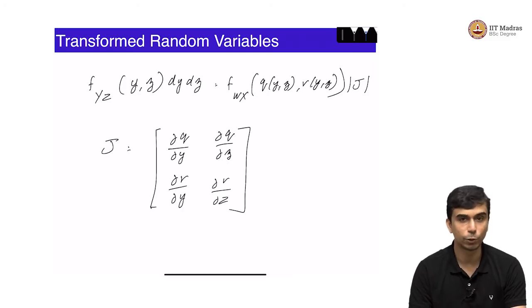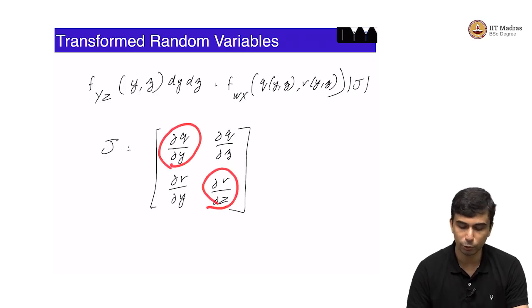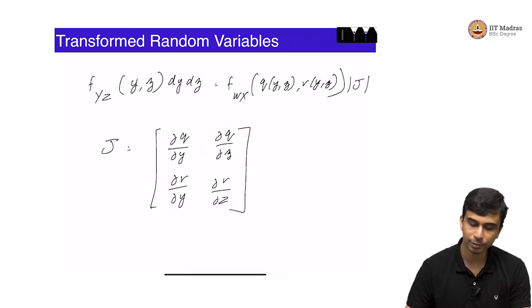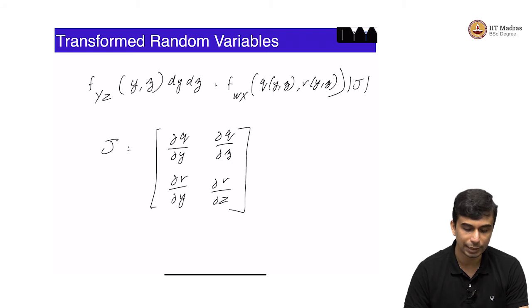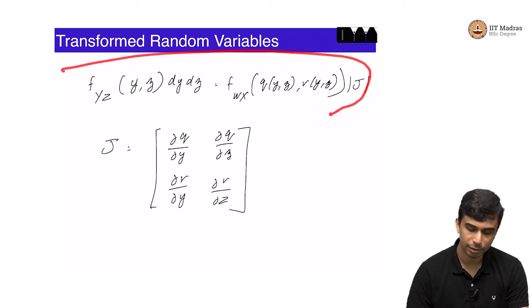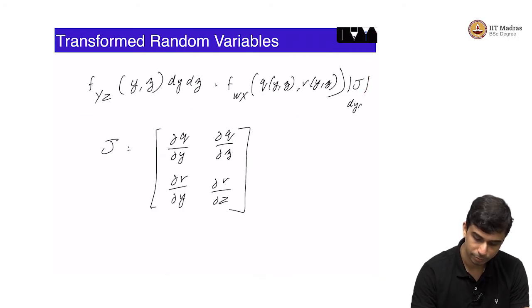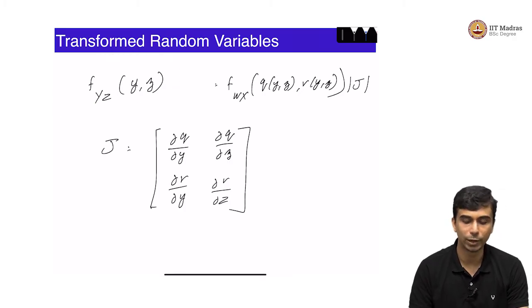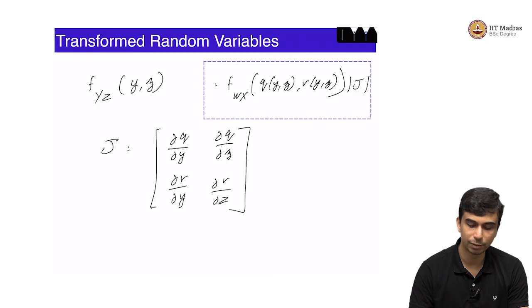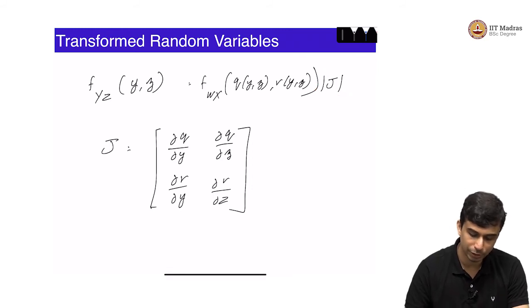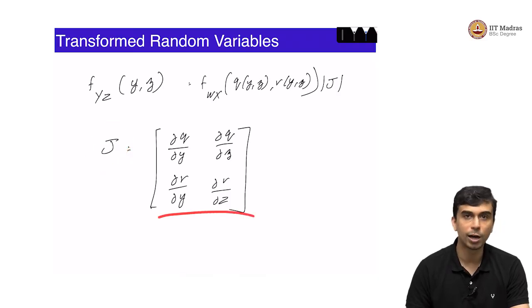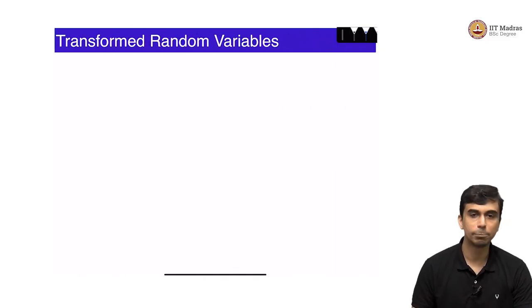The determinant of the Jacobian is intimately related to the area of this parallelogram. For a 2×2 matrix, the determinant is: partial q over partial y times partial r over partial z, minus partial q over partial z times partial r over partial y. This is called the change of variable rule to get the density of derived random variables from original random variables. The dy dz cancels on both sides, giving the joint density of y and z as the joint density of w and x evaluated at q(y,z), r(y,z) times the absolute value of the Jacobian.